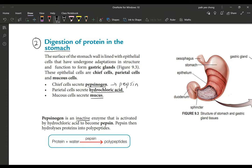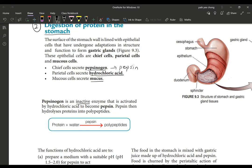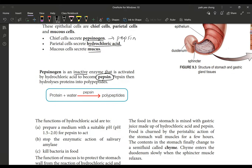Pepsinogen is an inactive enzyme that is activated by hydrochloric acid to become pepsin. The action of pepsin is to hydrolyze protein into polypeptides.